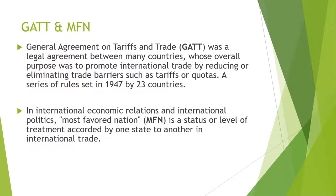There's a variety of ways that money can be distributed and exchanged between two different countries. One is called GATT, or the General Agreement on Tariffs and Trade — a legal agreement between many countries whose overall purpose was to promote international trade by reducing or eliminating trade barriers such as tariffs or quotas. This was a series of rules set in 1947 by 23 countries, to minimize certain boundaries and obstacles when conducting trade and tariffs across countries.